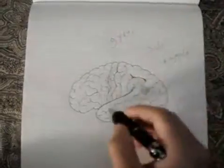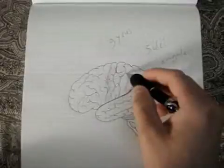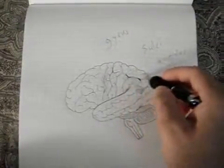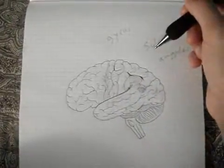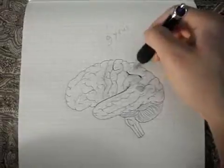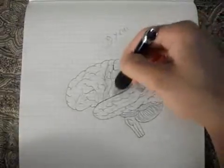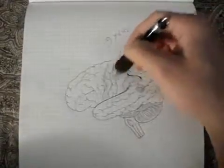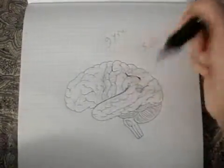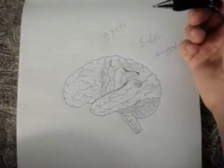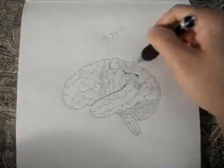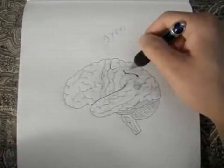Right on top of the intraparietal sulcus is the somatic sensory association area, associated with the primary somatic sensory area. Every primary area has a corresponding association area — for example, the primary visual area has a visual association area — and this somatic sensory association area is also involved in sensation from skeletal muscles and skin.